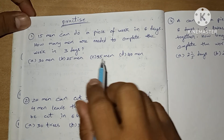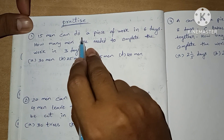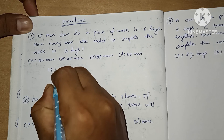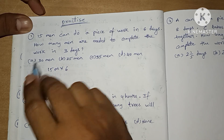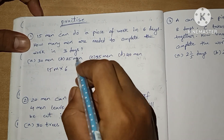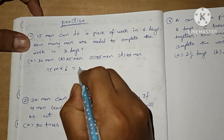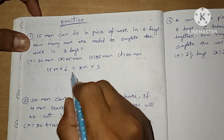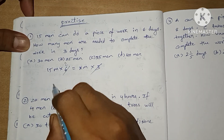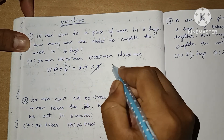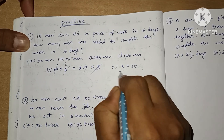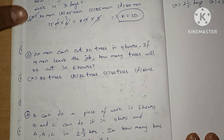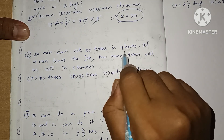Let's practice some questions. Question 1: 15 men can do a piece of work in 6 days. How many men are needed to complete the work in 3 days? Using the men-days relationship: 15×6 = X×3, so X = 90/3 = 30 men. The answer is option A, 30 men.